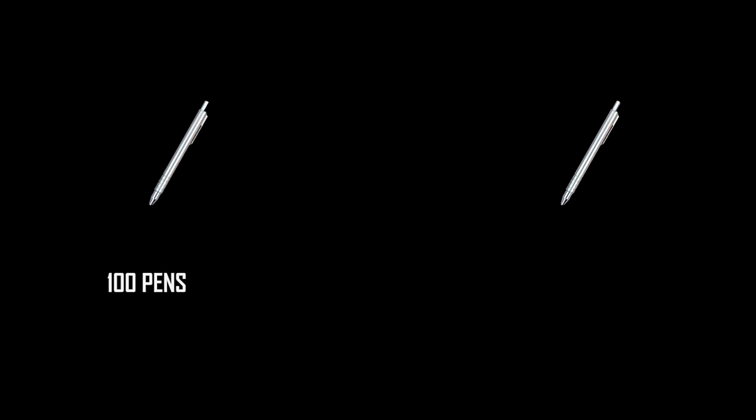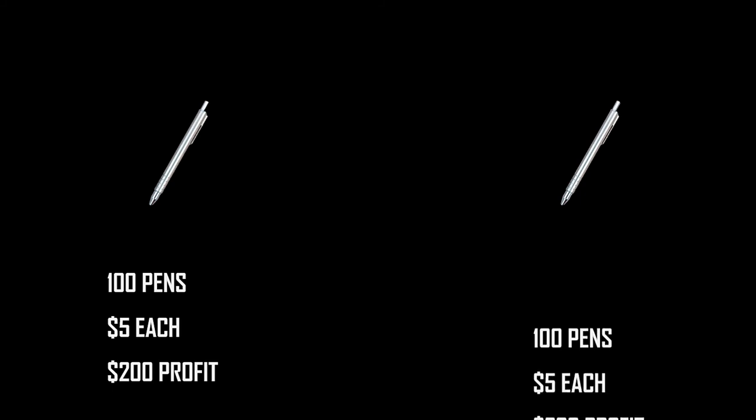For example, you are a pin manufacturer operating in a certain area. There is only one competitor in that area, and you are currently producing 100 pins every month. By selling them at $5 each, you can make $200 profit. Your competition is doing the same thing — selling the same amount of pins for the same price and making the same amount of profit.